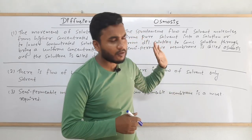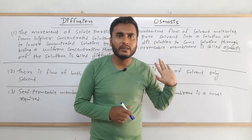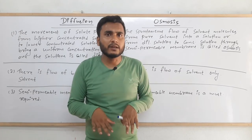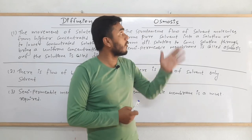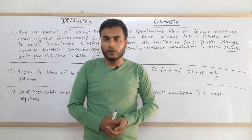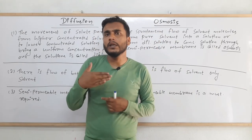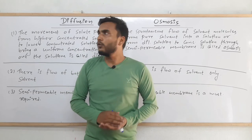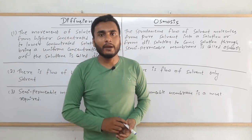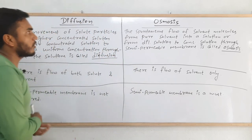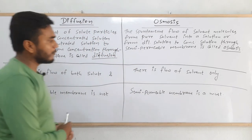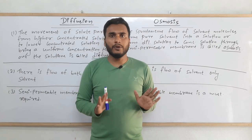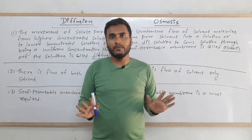One more thing to mention: there is osmotic pressure as well. The minimum amount of pressure that is required to stop osmosis from happening is called osmotic pressure, which we will study in further videos. So this is the difference between diffusion and osmosis. You can take a screenshot of the chart. I hope you understood everything. Thank you.